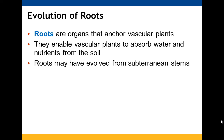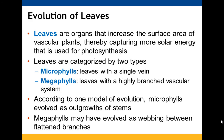Leaves help to increase surface area, capturing more solar energy. You can have microphyll leaves with a single vein, or megaphyll leaves with a highly branched vascular system. Microphylls possibly came from stems, while megaphylls may have evolved as webbing between flattened branches — showing how everything has some connection to surviving and continuing to thrive.